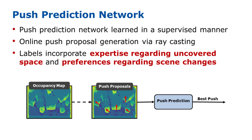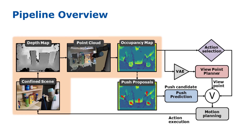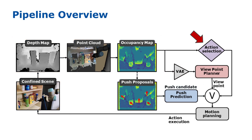To uncover hidden areas behind larger objects, we create multiple push proposals on the map. These are then input to a prediction network that is trained in a supervised manner and suggests the best possible push. Our approach uses the occupancy height map for viewpoint planning and push prediction. In the end, we use an action selection method that decides whether to perform more viewpoints, perform a push, or end the mapping.